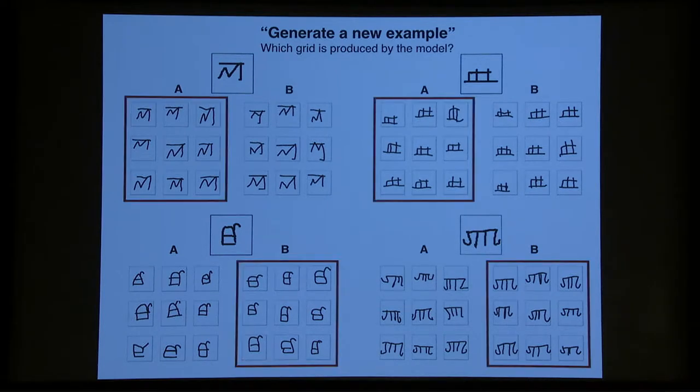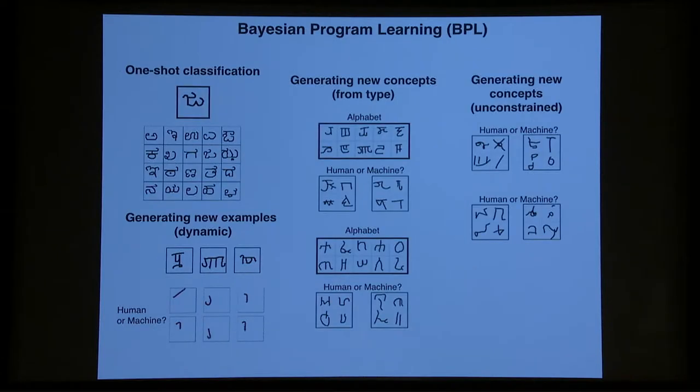All right, so highlighted in red here are the machine-produced examples, and it can be very hard to tell. We looked at many more tasks, including one-shot classification, generating new examples but with the dynamics, so rather than just seeing the static images produced by a human versus the machine, to see them actually drawn and get that type of information as well.